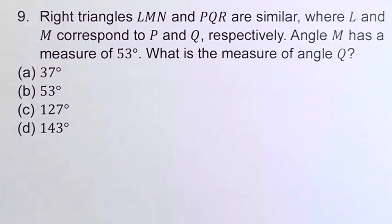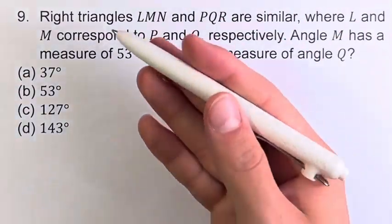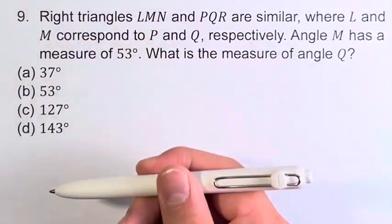So one way you could start to solve this is by drawing diagrams of these triangles and trying to figure out how the right angle fits into this and what measures of all the angles are.